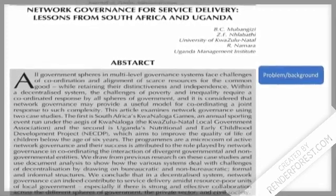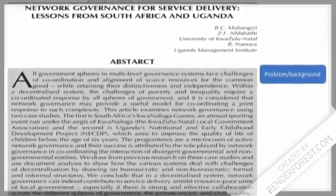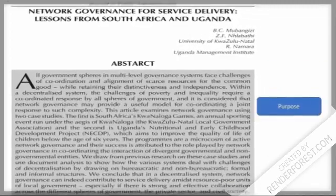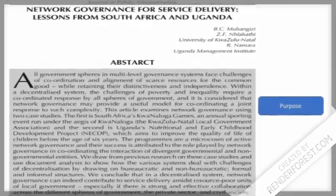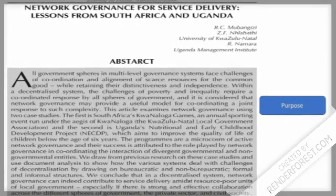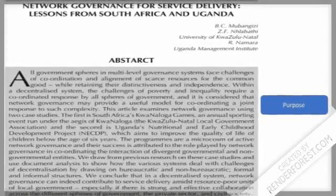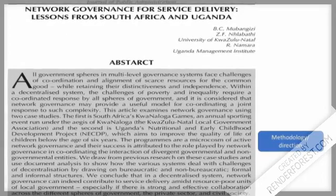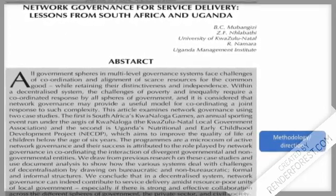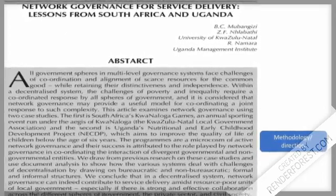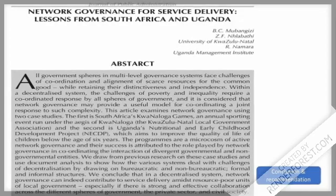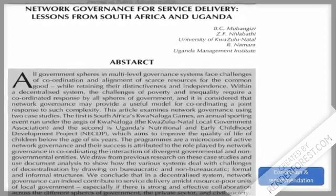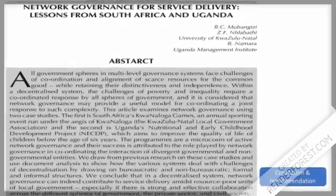In this example, sentence one gives the background to the problem which the article addresses. The second sentence then goes on to explain the focus or the purpose of this article, and then the next four sentences explain the case study methodology and the direction that the study will take. Finally, the abstract explains the conclusion which the researchers came to of the value of network governance.